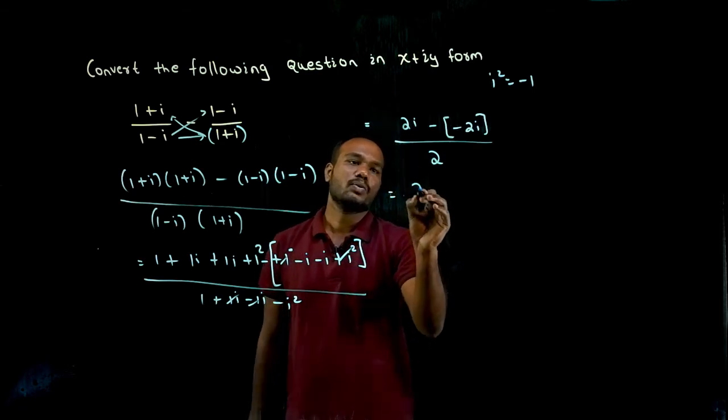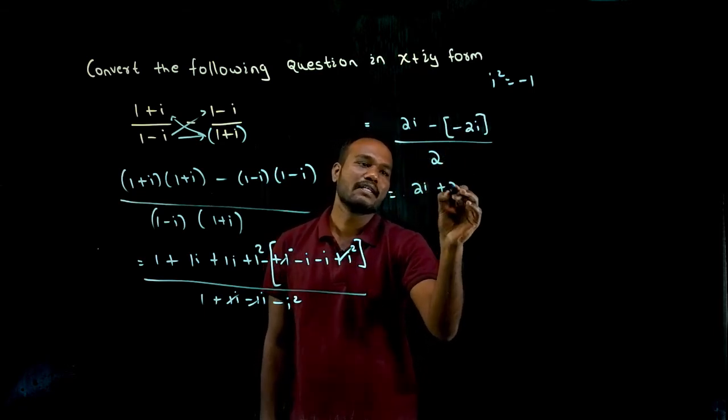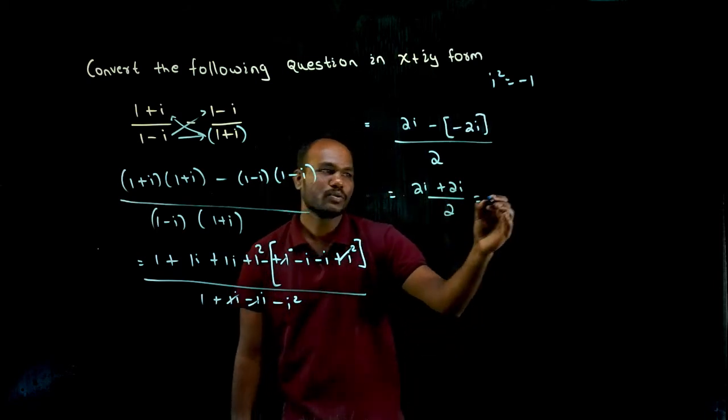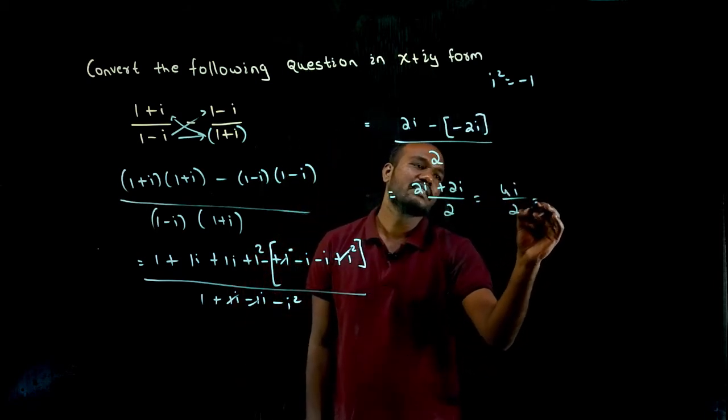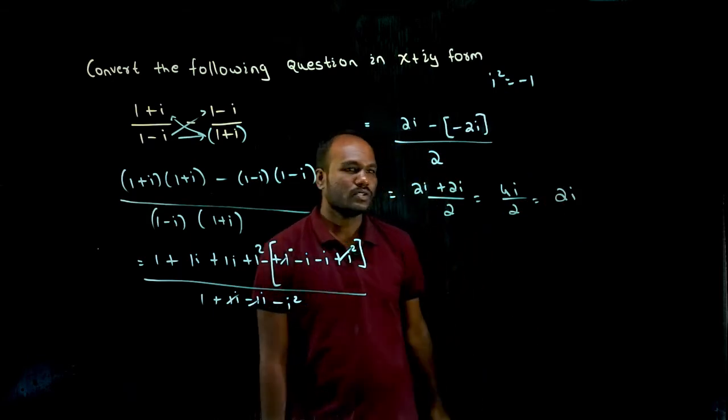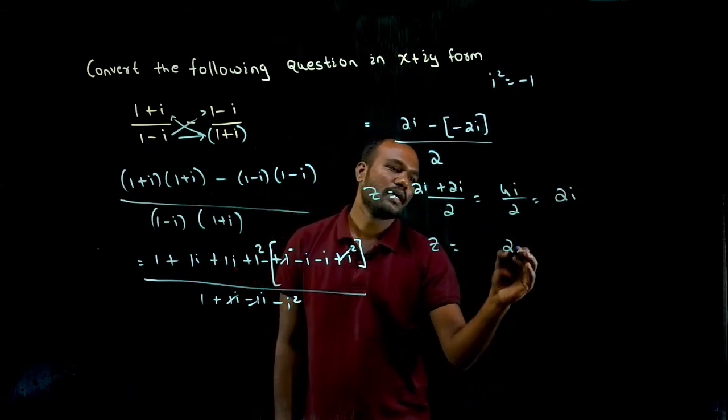So what do we get? 2i minus into minus is plus 2i divided by 2i plus 2i is 4i by 2, that is nothing but 2i. So this is the given z, given z is what? 2i.